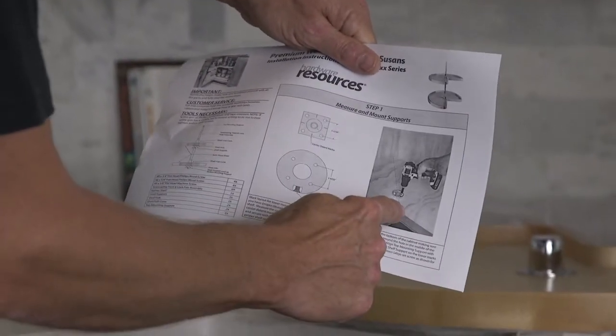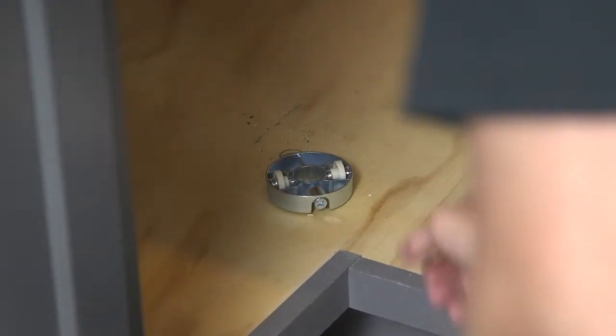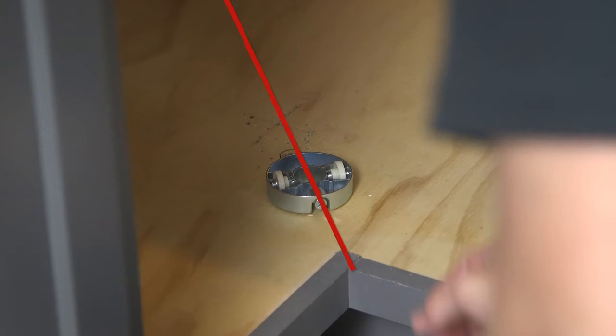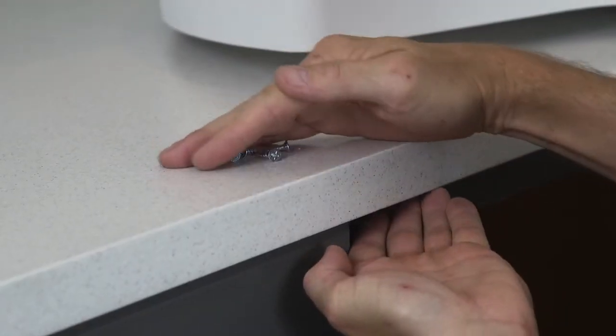Place one shelf support on the circle you have drawn aligning the set screw from corner to corner of the cabinet. Secure with four number eight by three quarter inch flathead wood screws provided.